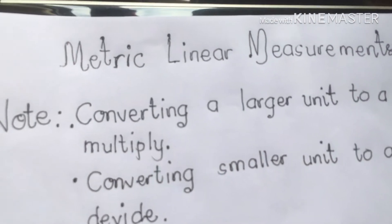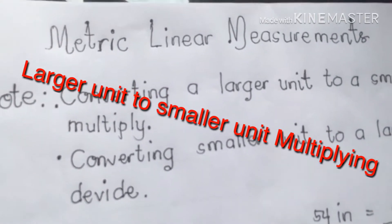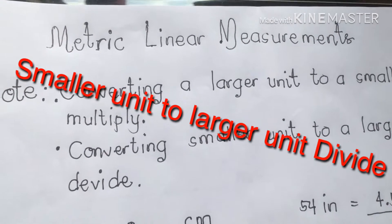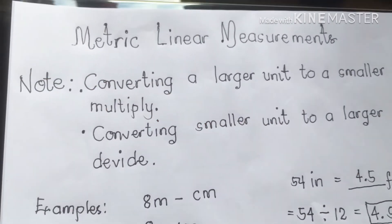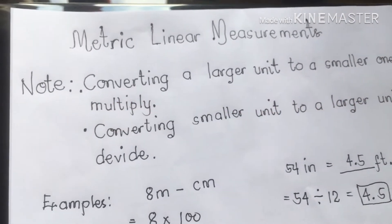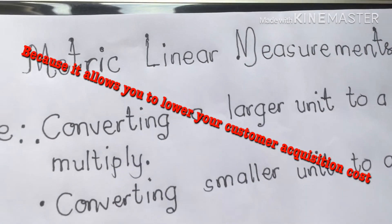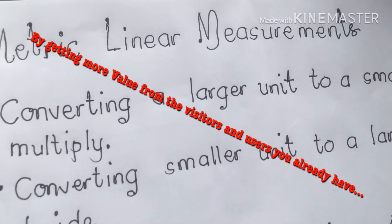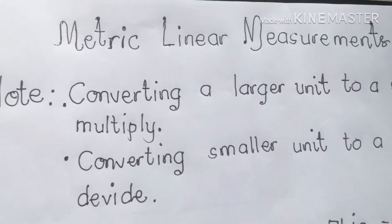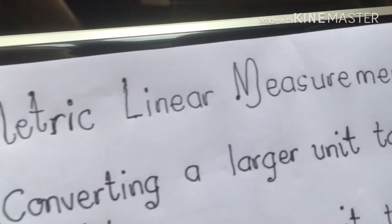How is linear measurement measured? The things measured by linear measurements are length, height, width, and distance. Why is conversion important? Conversion is important because it allows you to get more value and increase revenue per visitor, acquire more customers, and grow your business.